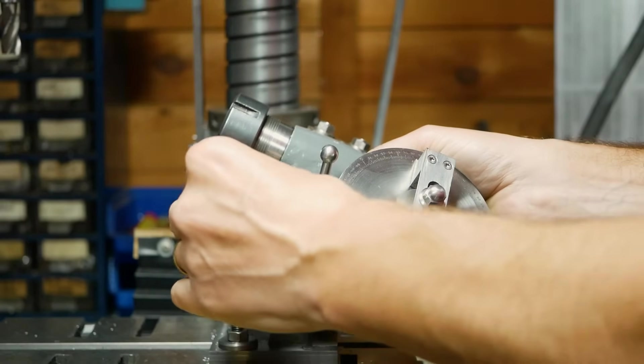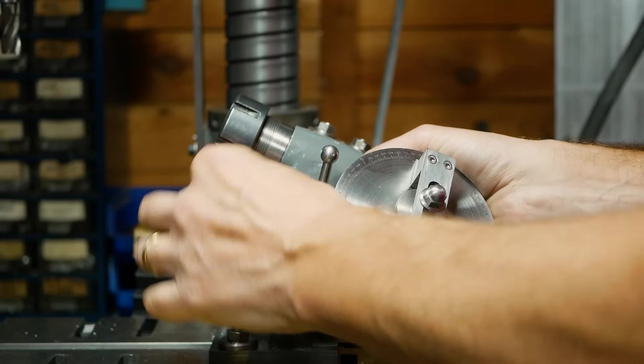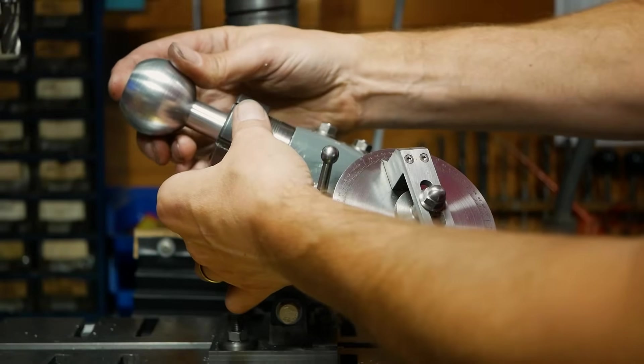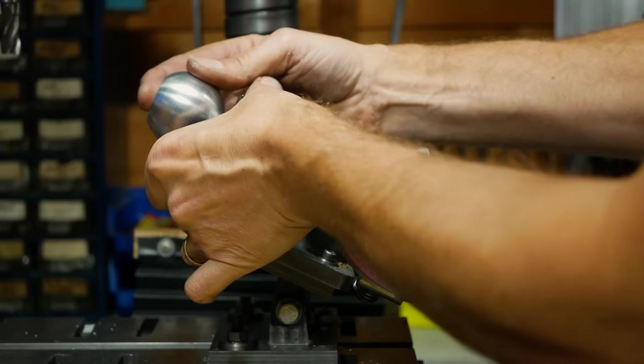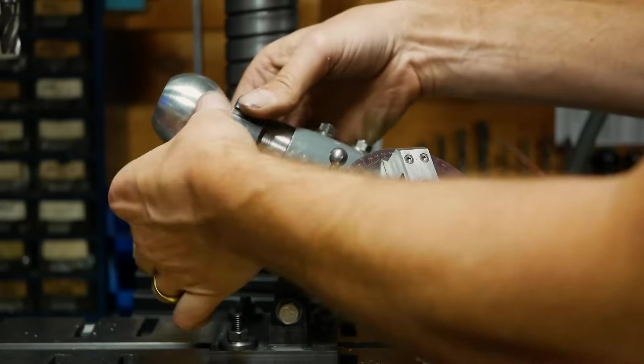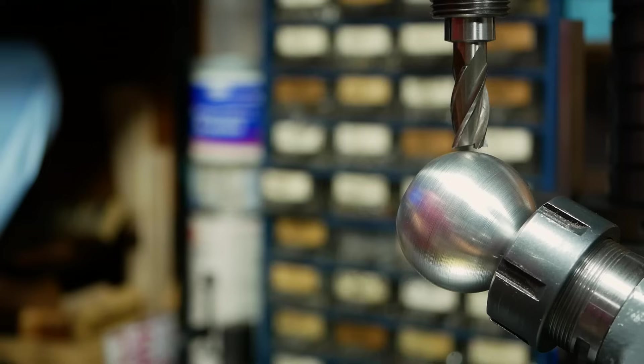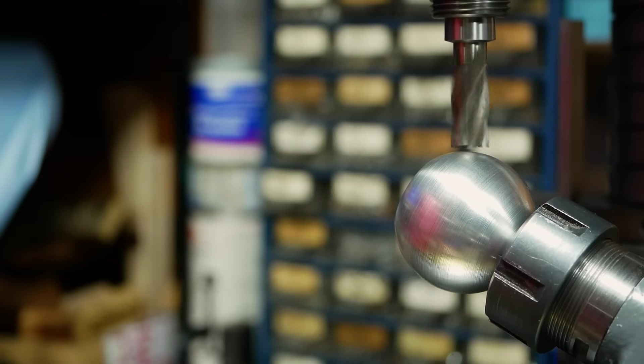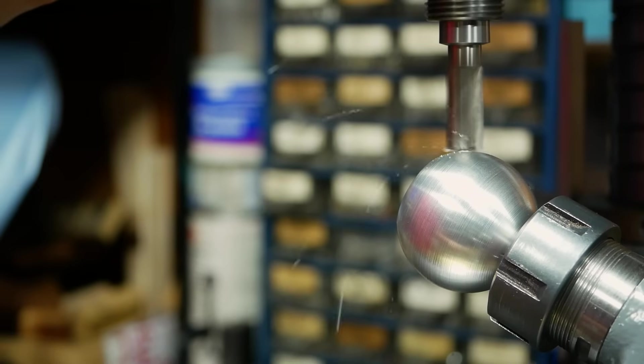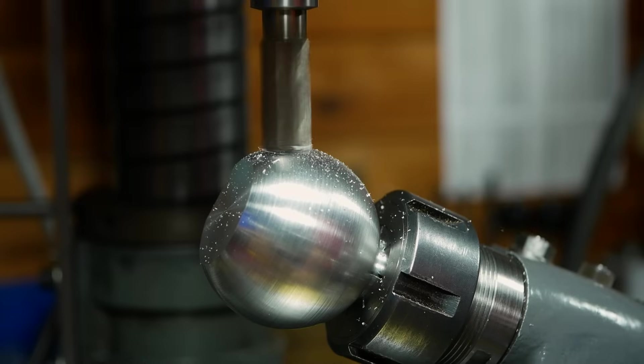The dividing head is then bolted to the angle plate, and the workpiece is mounted in the collet. On a small milling machine, such as this one, it's wise to only take small cuts with a large face mill. Instead, Alistair roughs out the faces using an end mill, which has smaller cutting forces, and finishes the faces with the face mill.